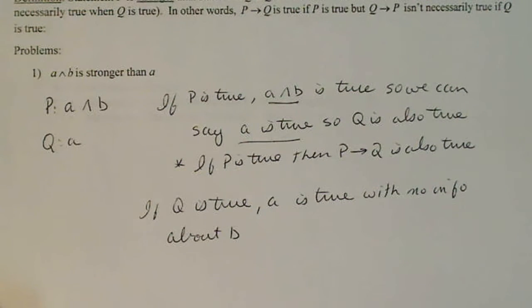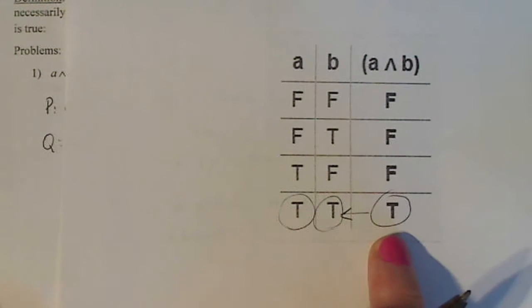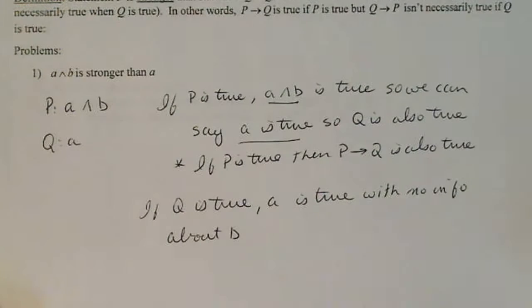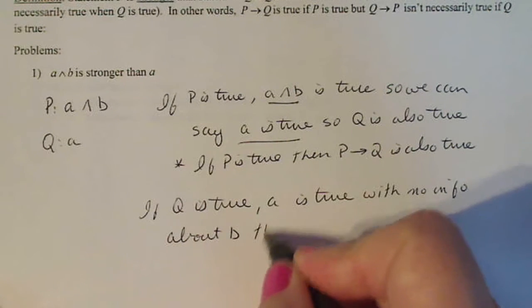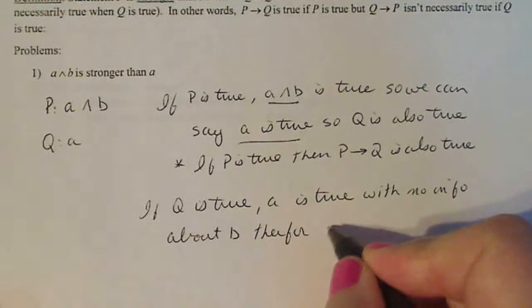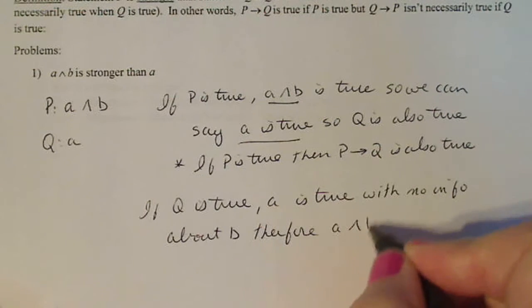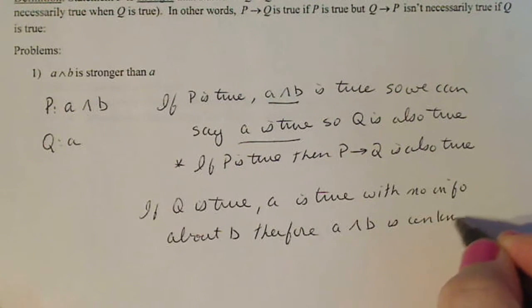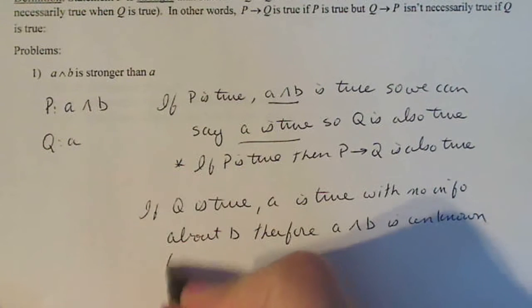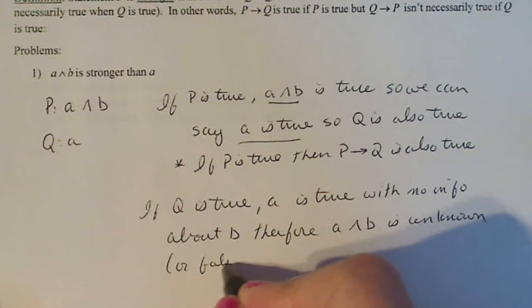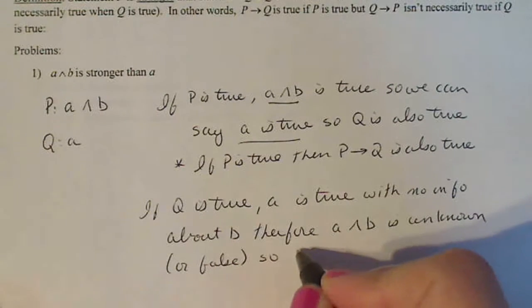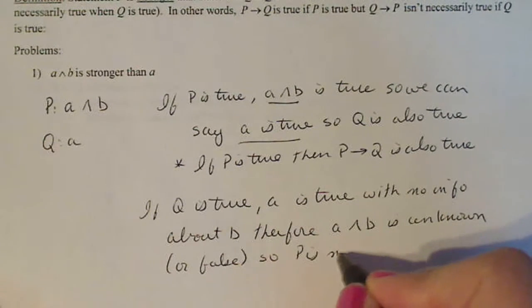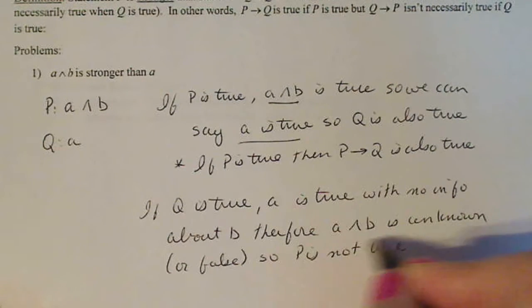So since by the truth table, I have to know for sure that A and B are both true. In order for A and B to be true, I can't make a claim here, can I? So I only know A is true, no info about B. Therefore, A and B is unknown. Not necessarily true or false. So P is not true. Not necessarily.